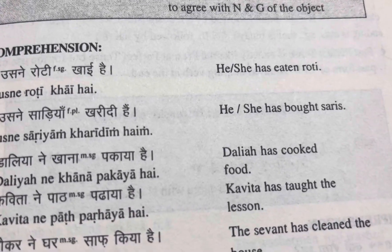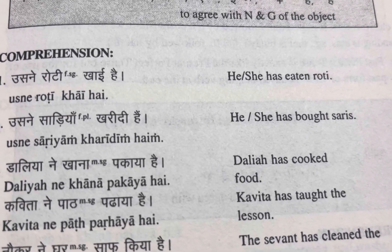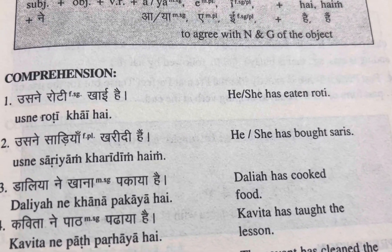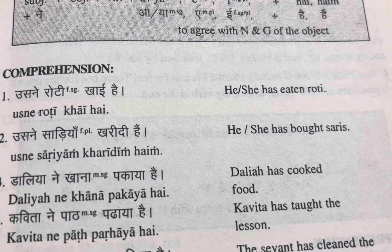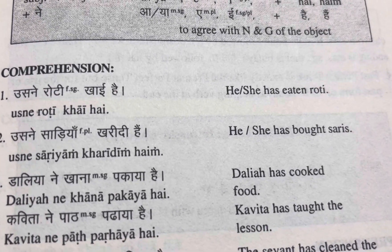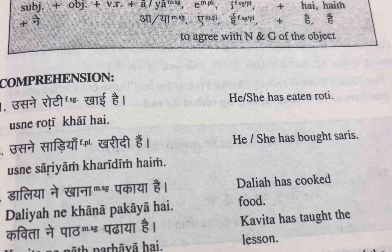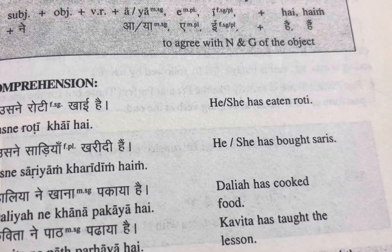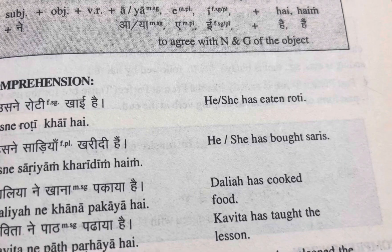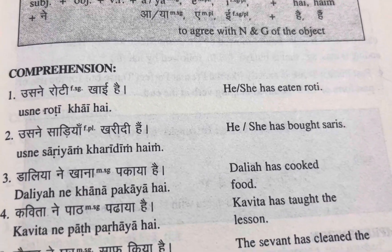He has eaten roti. Usne roti khai hai. Now focus that roti is feminine singular, so we are saying khai hai. We are not saying khaya hai, because we are focused on what has been eaten.